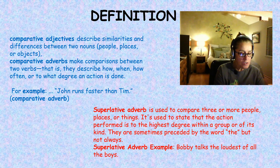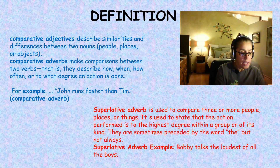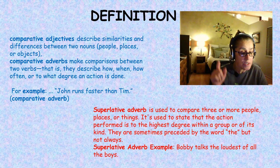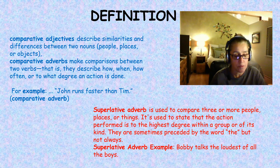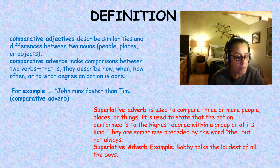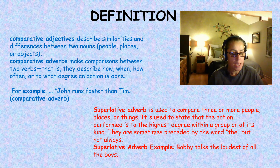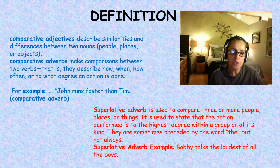Let's talk about what an adjective is first. The definition of an adjective is: words that are used to describe or modify nouns or pronouns. An example of simple adjectives are red, quick, and happy. She's wearing a coat — coat is a thing. She's wearing a red coat — that's an adjective; it's describing or modifying the noun.